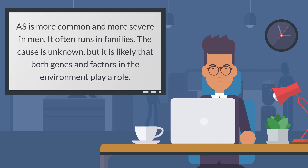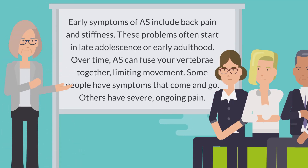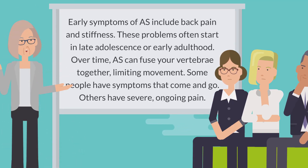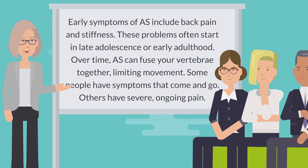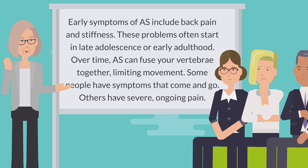The cause is unknown, but it is likely that both genes and factors in the environment play a role. Early symptoms of ankylosing spondylitis include back pain and stiffness. These problems often start in late adolescence or early adulthood.